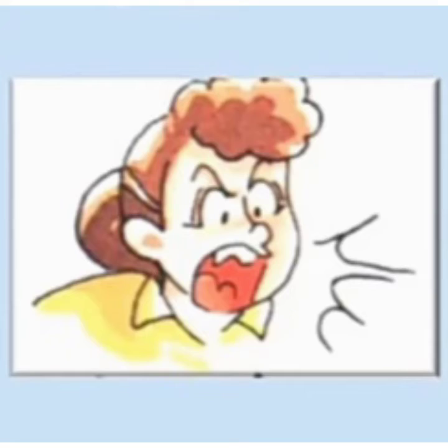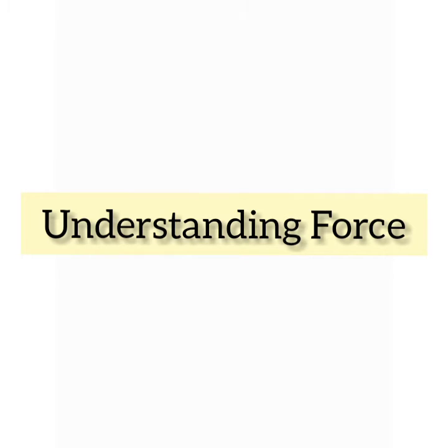Sounds are of two types. The first one is pleasant sounds — sounds that are soft and make us happy. For example, music. While some sounds are unpleasant and irritate us. For example, the continuous honking of a vehicle. We like to hear soft and pleasant sounds and do not like to hear loud and unpleasant sounds.